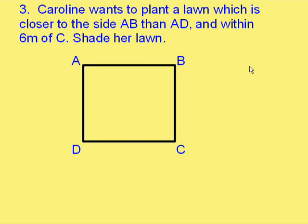Third example. Caroline wants to plant a lawn which is closer to the side AB than AD and within six metres of C. So, closer to this side than that side.